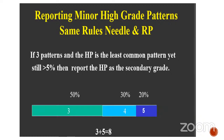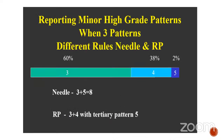If the worst tertiary pattern comprises only 2%, this rule applies differently depending on specimen type. In needle biopsies, regardless of the percentage of the worst pattern, you take it as the secondary pattern because that pattern will likely be more represented in the final specimen. However, this rule does not apply to radical prostatectomy specimens. This was the consensus reached by the 2014 ISUP update, though the 2019 GUPS — the Genitourinary Pathology Society — has a slight disagreement on this issue.